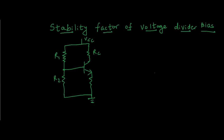Hello all, welcome to the new video. In this video we will see the stability factor of voltage divider bias. In the past videos we calculated the stability factor for fixed bias and then for collector-to-base bias. We concluded that collector-to-base bias is more stable than the fixed bias circuit. This is the next biasing scheme in BJT as well as MOSFET — the popular biasing scheme called voltage divider bias.